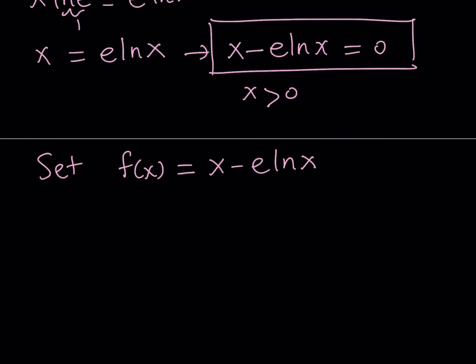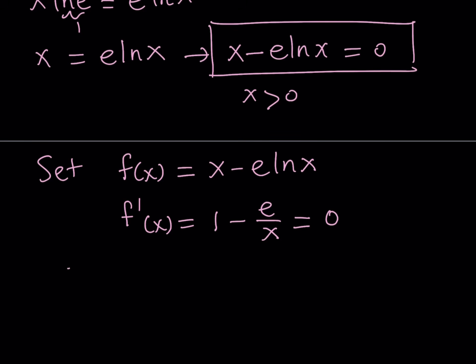What am I going to do with this? Well, I'm going to differentiate this. My goal is to find how this function behaves and possibly come up with a basic sketch of the function so I can look at its behavior, because that's going to give me information about possible roots. The derivative is very easy: the derivative of x is 1, the derivative of ln x is 1 over x, and e being a constant it's just e times 1 over x, which is e over x. So the derivative of f is 1 minus e over x. We're going to proceed with setting that equal to 0, because we want to find the critical values. From here we get e over x equals 1, and this implies that x equals e.